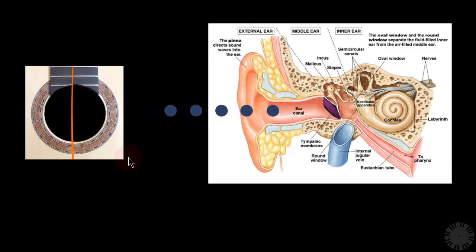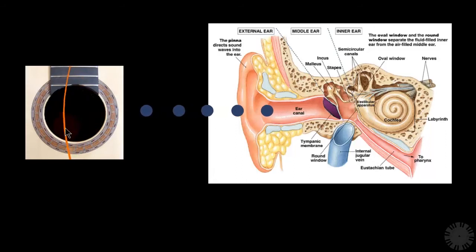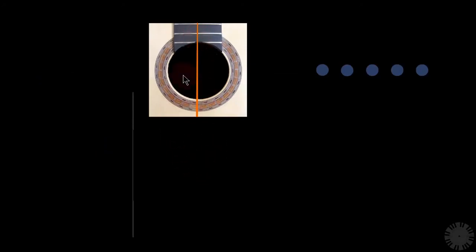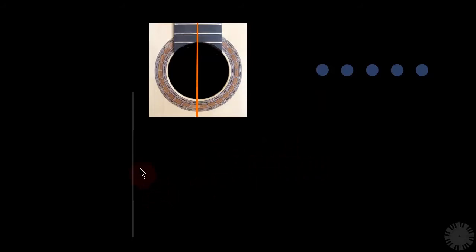We already know that when the string vibrates back and forth it creates a wave, and what we're going to do is plot this vibration on paper. On the x-axis we have time, because a wave is a vibration in time — it's not a single instance but an ongoing thing. On the y-axis we have what we call amplitude, or displacement.